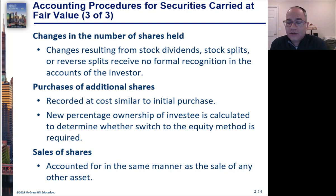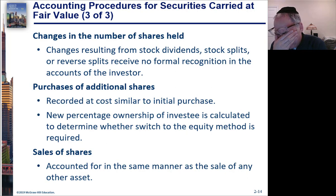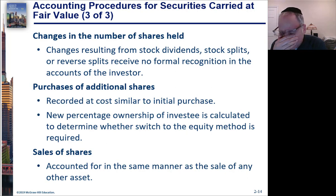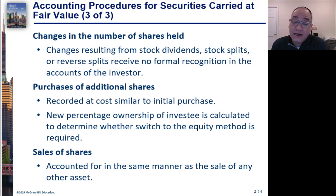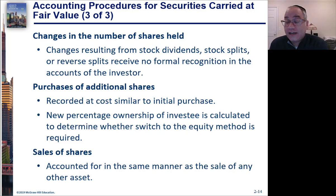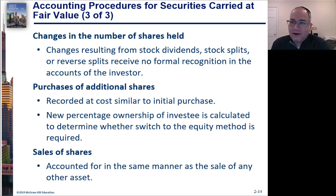If you buy enough shares to acquire significant influence, you shift over to the equity method at that point. It used to be that you had to go back and adjust retroactively with a prior period adjustment, but that's no longer the case — that rule has been changed, which simplifies things considerably.